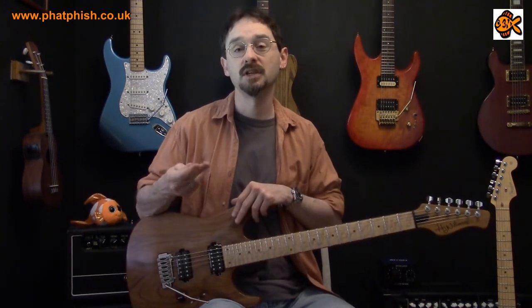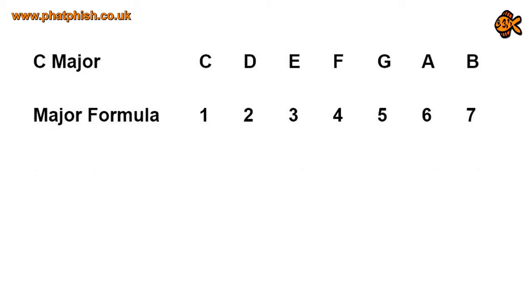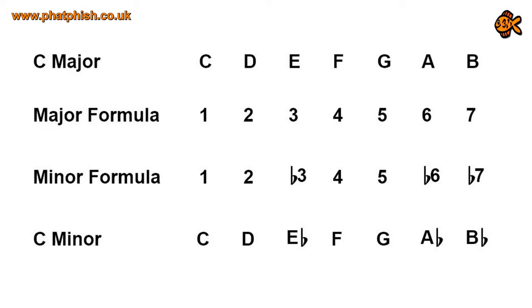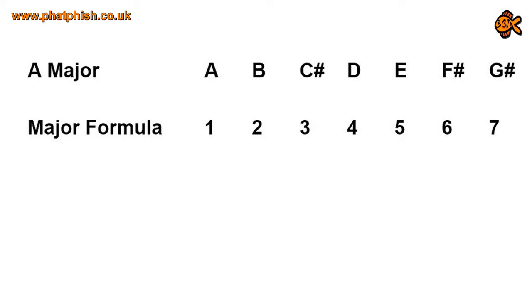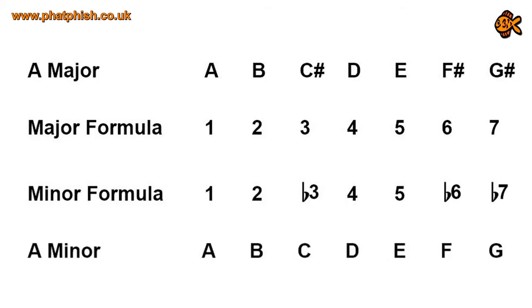So in the case of C: this is C major with its formula, and the formula of the minor scale lowers those degrees. If we take the notes of C major and apply that formula, we end up with the notes of C minor. Applying the same thinking to a scale beginning on A: we've got an A major scale with the major scale formula, and if we apply the minor scale formula and modify the A major scale, we end up with the notes of the A minor scale.